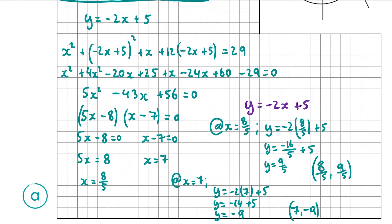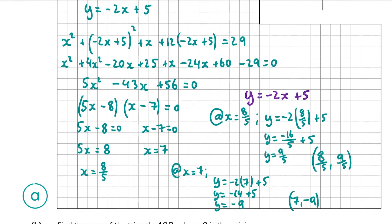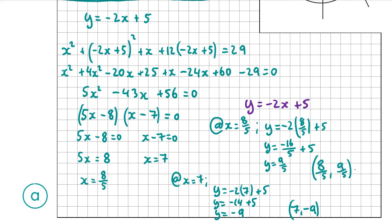So we have our two coordinates: (8/5, 9/5) and (7, minus 9). We need to label these A and B. Both coordinates in (8/5, 9/5) are positive, placing it in the first quadrant where A is, so that must be A, and (7, minus 9) is B. That's our answer for part A, and now we're going to look at part B, which is also worth 10 marks.